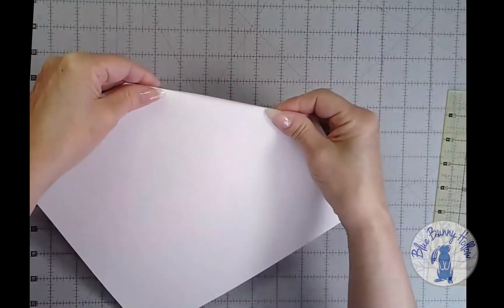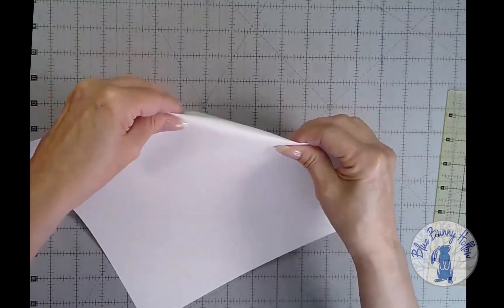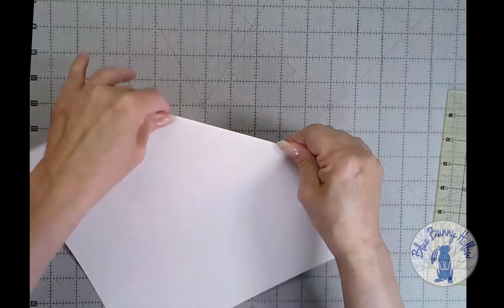Fold the small corners first. Then I like to use a roller press to crease the edges well.